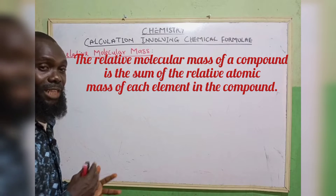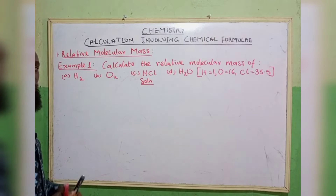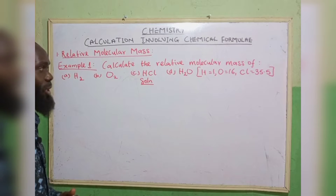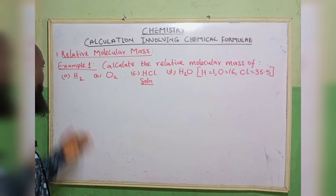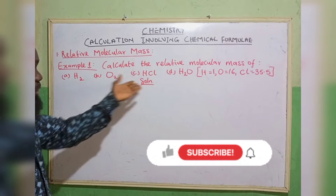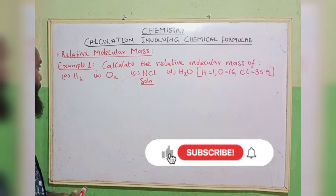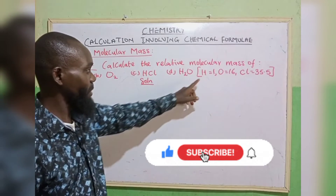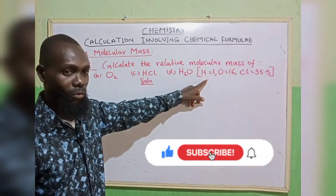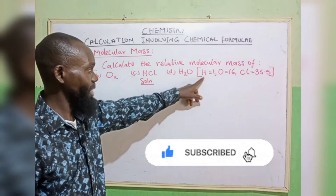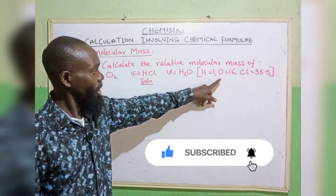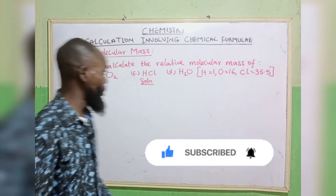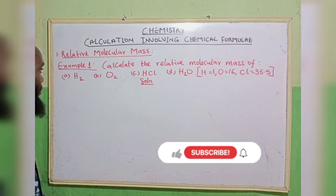Now let's dive in. Example 1: Calculate the relative molecular mass of the following compounds or molecules, given the atomic masses of the elements involved. Hydrogen equals 1, oxygen equals 16, chlorine equals 35.5.